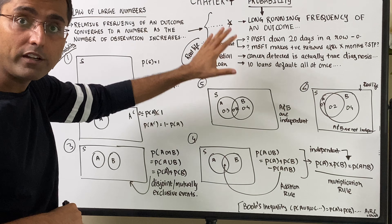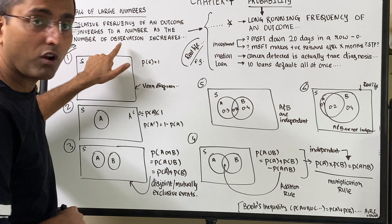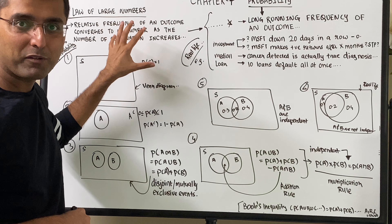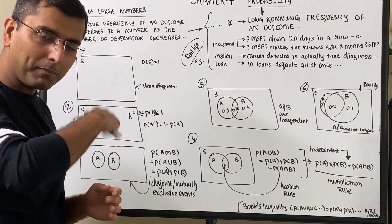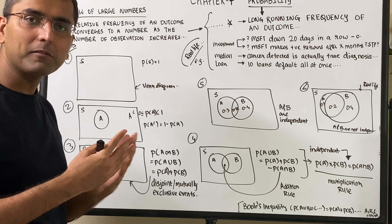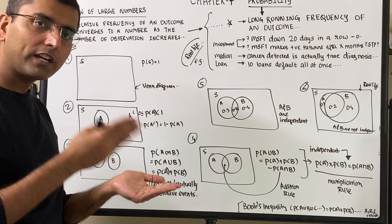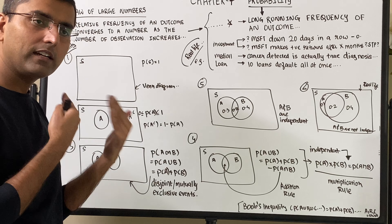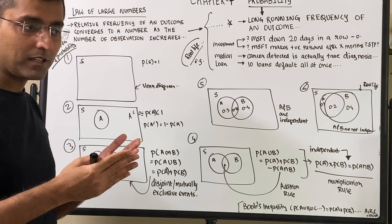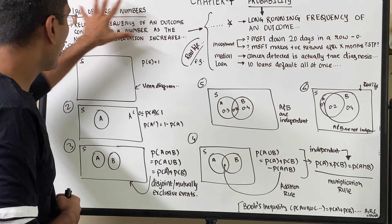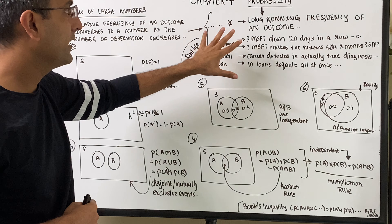The relative frequency of an outcome converges to a number as the number of observations increases — that is the Law of Large Numbers. This convergence gives you a benchmark to evaluate how an investment is doing, how a team is performing, or how an algorithm or model is doing. It's rooted in the normal distribution and bell curve patterns we saw in Chapter 6, and it's very powerful.